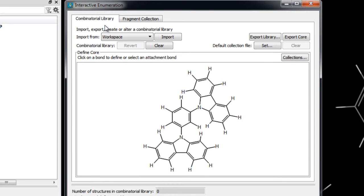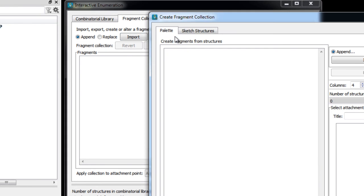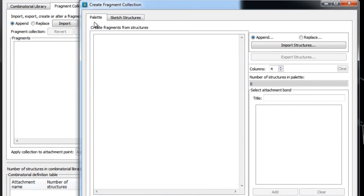In order to create a fragment library within the fragment collection tab, simply click create to open the create fragment collection panel.